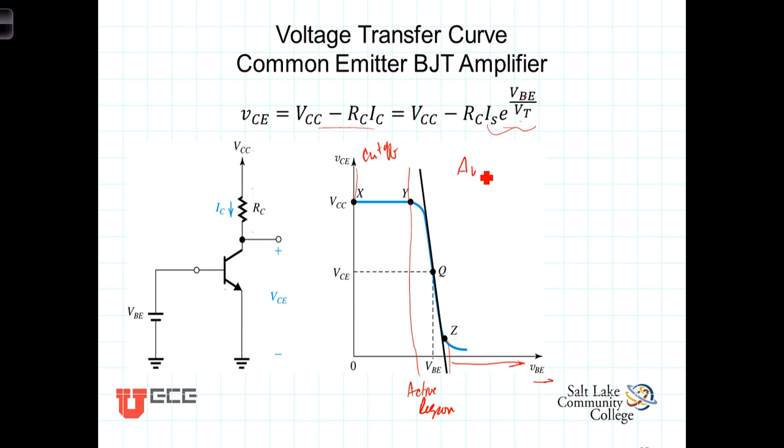The voltage gain A sub V is defined as the partial of VCE with respect to VBE evaluated at the quiescent point VCE equals the quiescent voltage VCE and the quiescent VBE. Now, we can go ahead and take this or calculate the partial of this expression here.